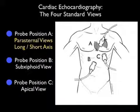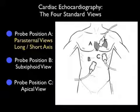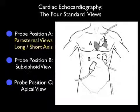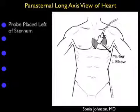The last view is going to be shown by probe position C, the apical view of the heart at the point of maximal impulse. This module will specifically focus on the parasternal views, specifically looking at the long axis plane. There's a great deal of information we can get from the parasternal long axis plane, so let's learn how to perform the examination.